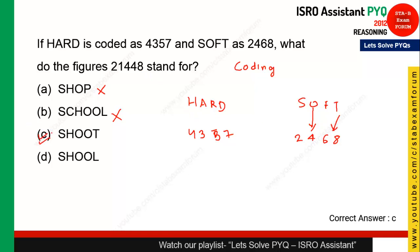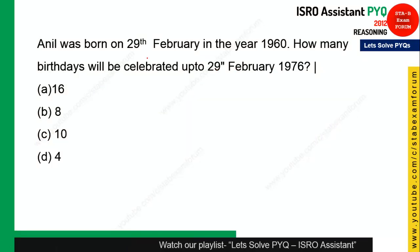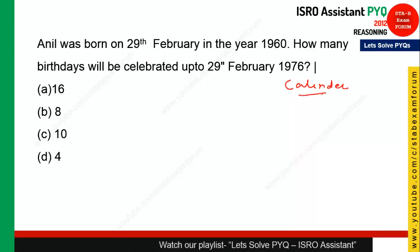The next question is from the category called calendar. The question says Anil was born on 29th February 1960. As you know, February has 28 days in normal years but 29 days in a leap year, so 1960 is a leap year.